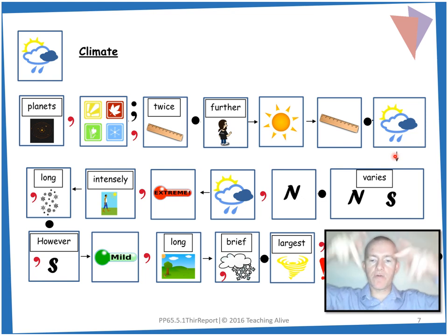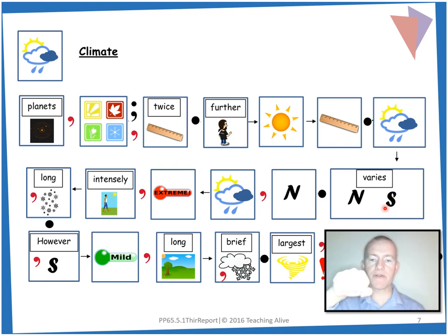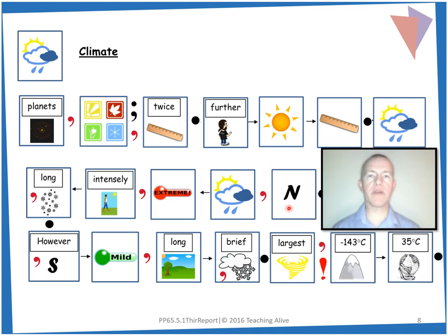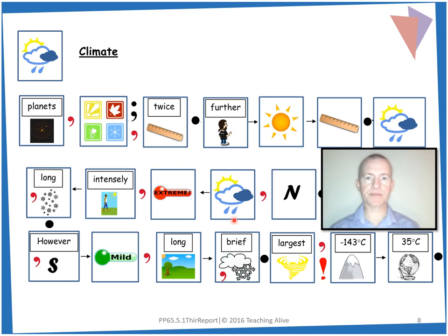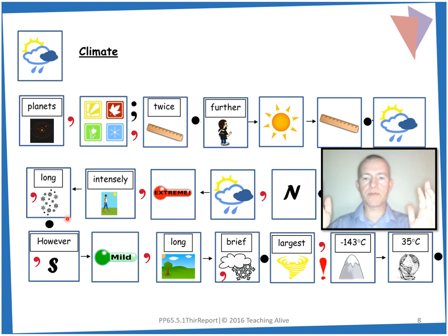The climate — sun, rain, cloud — varies from the northern hemisphere to the southern hemisphere. We can chop in half for hemisphere. Full stop. So we start with: in the north, comma, the climate is one of extremes, comma, with intensely hot summers and long, comma, cold winters. Full stop.